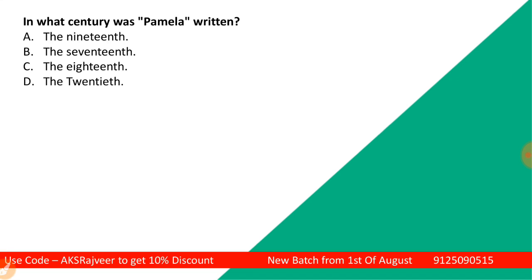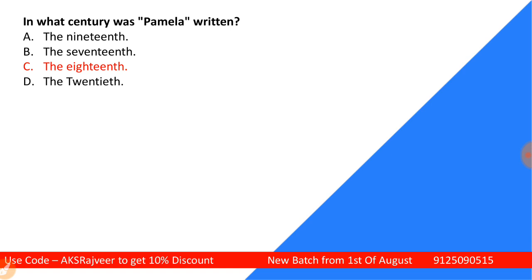Next question: In what century was Pamela written? Options are the 19th century, 17th century, 18th century, or 20th century. The correct answer is the 18th century, because 1740 falls in the 18th century. As Matthew Arnold says, the 18th century is known as the age of prose and reason. Remember: from 1701 to 1800 is the 18th century, and from 1801 to 1900 is the 19th century.